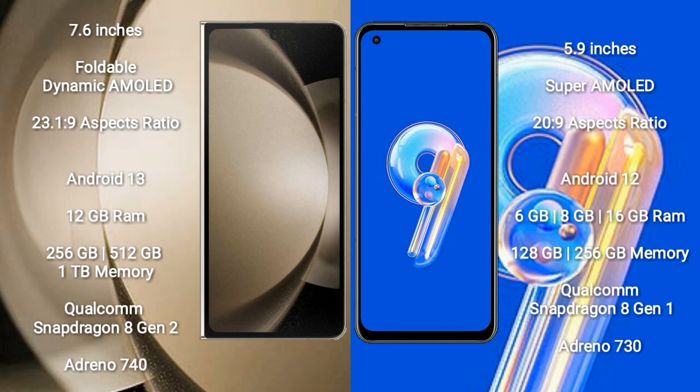Samsung Galaxy Z Fold 5 comes with 12GB RAM and 256GB, 512GB, or 1TB internal storage, with a Qualcomm Snapdragon 8 Gen 2 processor and Adreno 740 GPU. Asus Zenfone 9 comes with 6GB, 8GB, or 16GB RAM and 128GB or 256GB internal storage, with a Qualcomm Snapdragon 8 Gen 1 processor and Adreno 730 GPU.